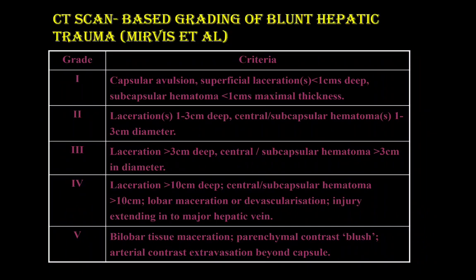The organ injury grading uses a standard grading system. A laceration less than 1 cm or subcapsular hematoma less than 1 cm is Grade 1. Laceration 1 to 3 cm or subcapsular hematoma less than 3 cm is Grade 2. Laceration more than 3 cm deep or central, or subcapsular hematoma more than 3 cm, is Grade 3. Laceration more than 10 cm, subcapsular hematoma more than 10 cm, or lobar maceration or devascularization extending into a major hepatic vein is Grade 4. Grade 5 is massive lobar tissue maceration or parenchymal contrast blush with arterial contrast extravasation beyond the capsule.